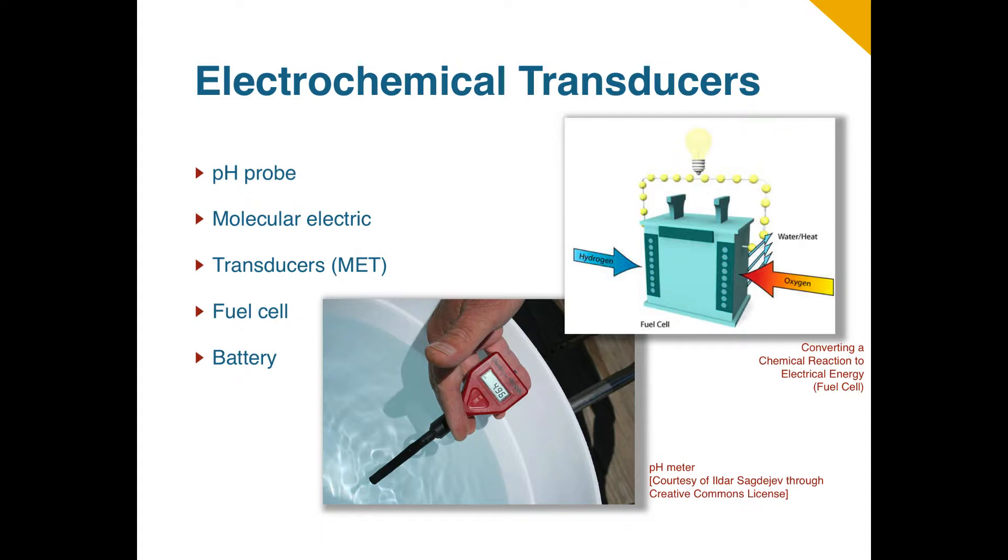Another electrochemical transducer is the fuel cell. A fuel cell converts the chemical energy from a fuel into electricity through a chemical reaction with oxygen, or another oxidizing agent. Hydrogen is the most common fuel used in fuel cells. Fuel cells are different from batteries in that they require a constant source of fuel and oxygen to run, but they can produce electricity continually for as long as the fuel is supplied.